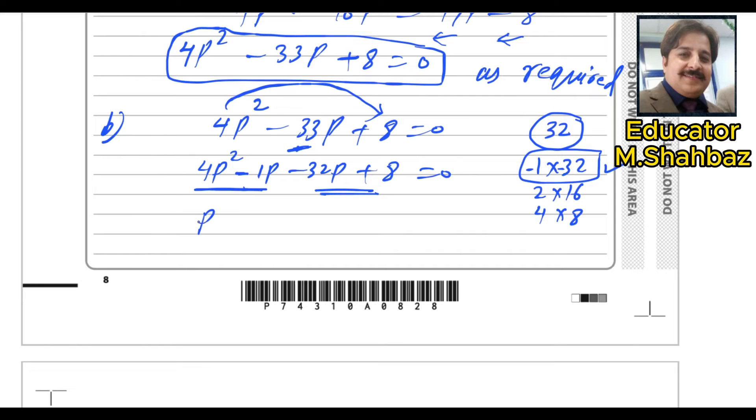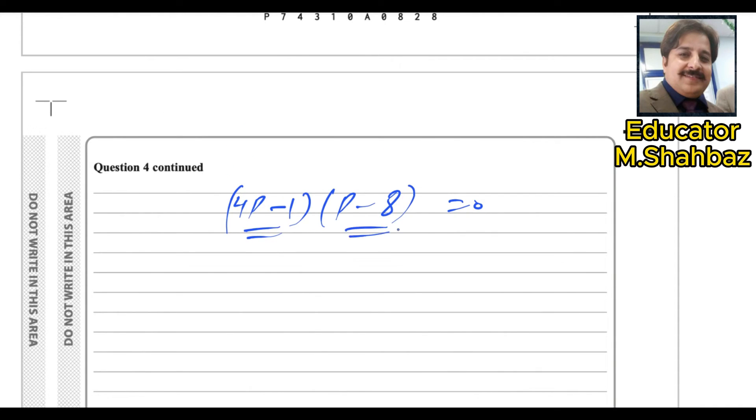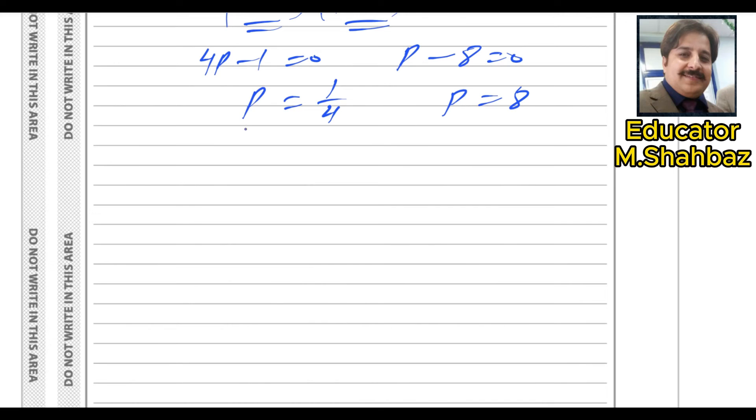What is common in these two? p is common, so it left with 4p minus 1. And minus 8 is common, it left with 4p minus 1. This 4p minus 1 is the common, again, 4p minus 1, p minus 8 equals to 0. One answer from this pair and other answer from this pair. So 4p minus 1 equals to 0 and p minus 8 equals to 0. And p equals to 1 over 4 here and p equals to 8. To solve for x, not for p. So we know that value of x is 2 power x equals to 1 over 4.